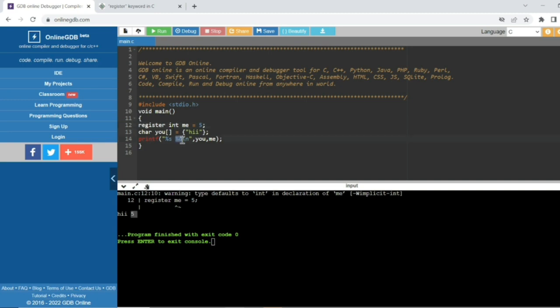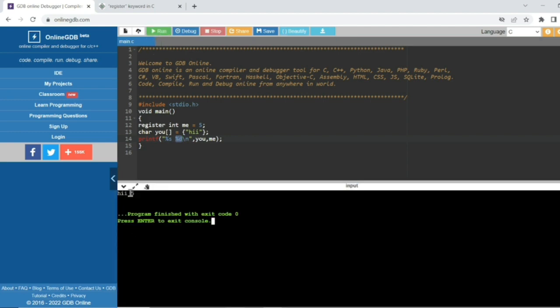If I declared here integer, because here output is percentage d, percentage d declared by integer data type, then see hi phi. Okay, warning gone. So this is about register storage class. So output for this is hi-fi.